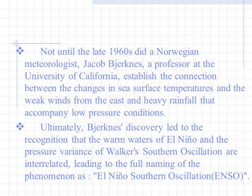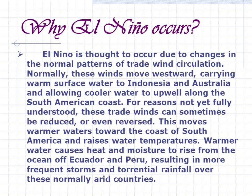Ultimately, Bjerknes' discovery led to the recognition that the warm waters of El Niño and the pressure variants of Walker's Southern Oscillation are interrelated, leading to the full naming of the phenomenon as El Niño Southern Oscillation (ENSO). Why El Niño occurs: El Niño is thought to occur due to changes in the normal patterns of trade wind circulation.